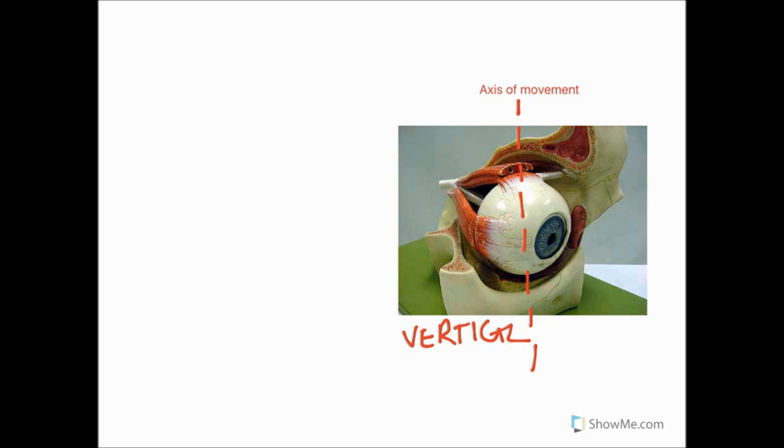If you imagine that this is a pole going through the eye and you could twiddle that between forefinger and thumb, if you turn it this way you would get a movement of the eye towards the nasal cavity and that would be called adduction. Likewise we could do it back the other way and that would be called abduction. So that's the movements we get on the vertical plane.